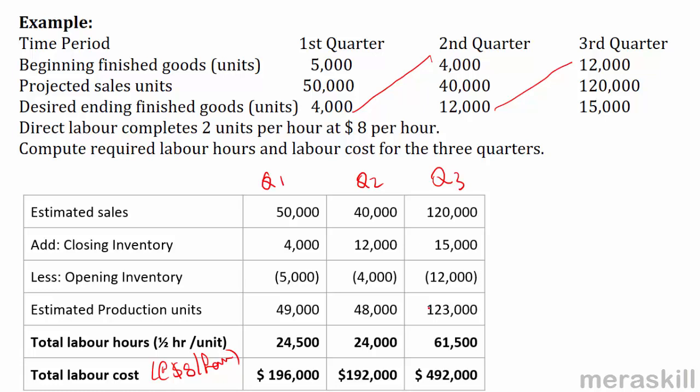In summary: we first fix the sales budget. Once we know how much we are going to sell, we adjust for inventories to decide how much to produce. From the production budget, we can determine material purchases and labor requirements — that is the overall budgeting sequence.